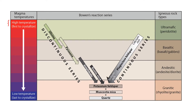Minerals at the top have relatively high crystallization temperatures, so they will be the first to crystallize from a magma as it cools. Minerals at the bottom have relatively low crystallization temperatures, so they will crystallize last. Bowen suggested that crystallization of minerals from high to low temperatures could be divided into a continuous reaction series and a discontinuous reaction series.